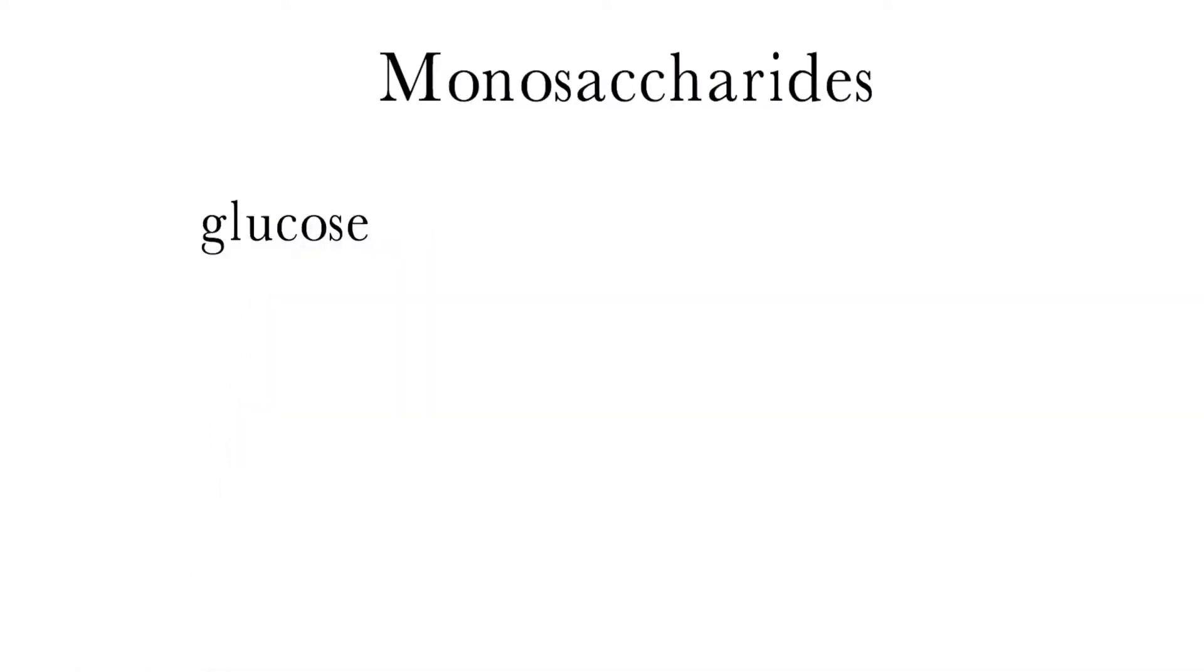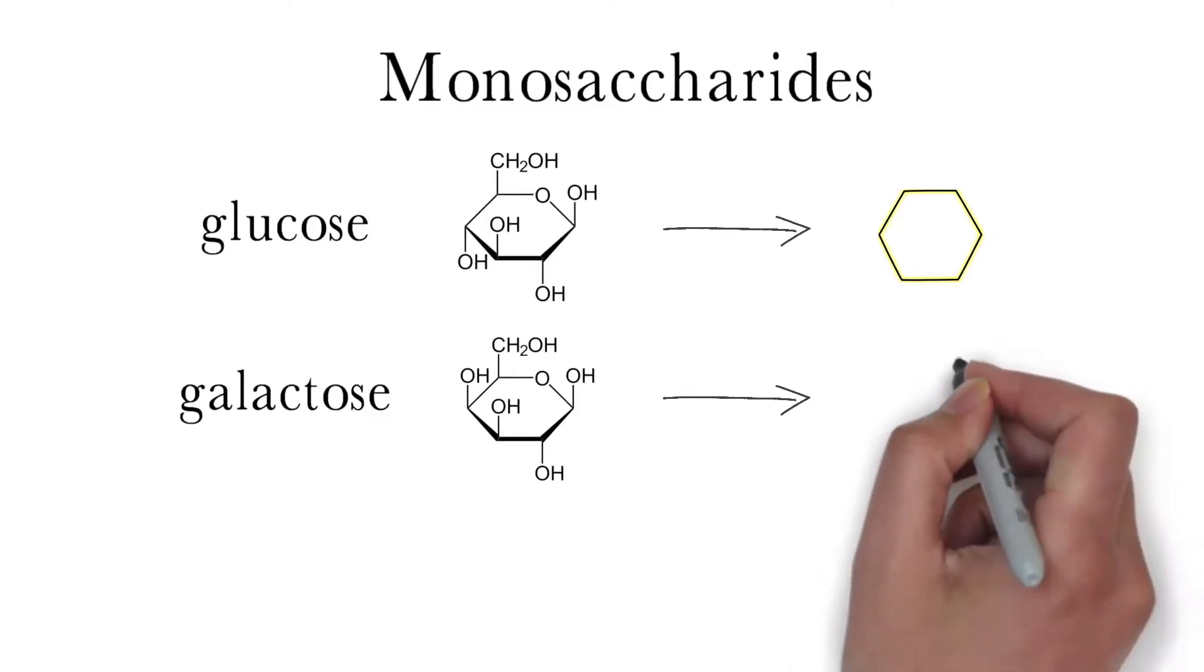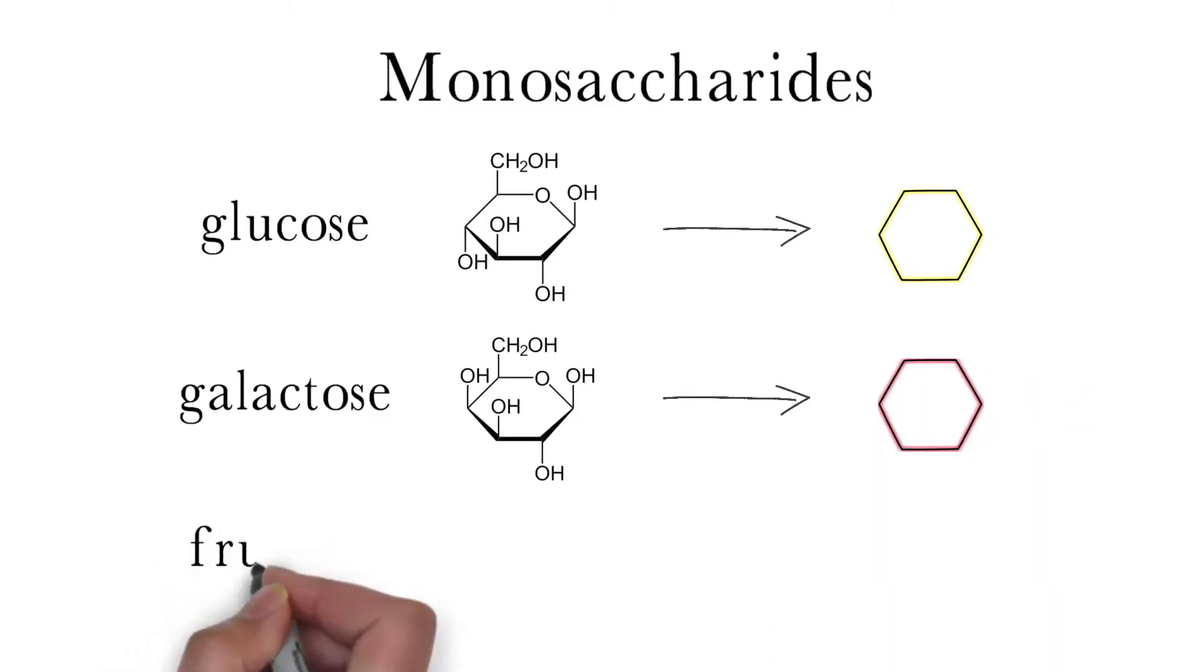The first is glucose, also known as blood sugar, which will be represented by this yellow hexagon. The second is galactose, which is found in dairy products, which will be represented by this red hexagon. The third is fructose, which is found naturally in fruit and will be represented by this blue pentagon.